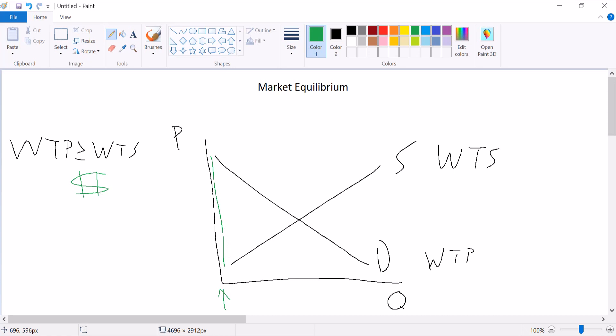And then as we move farther along, there's still willingness to pay that's greater than willingness to sell all the way up until this point where the two lines cross. Up until that point, every potential unit sold has a willingness to pay that is greater than a willingness to sell. And so up until that point, we expect sales to occur that will benefit both buyer and seller.